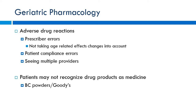Prescriber errors are a big problem when age-related changes in renal and hepatic function aren't accounted for. Patient compliance errors occur due to cognitive decline — patients taking too much or not enough. For example, Spiriva is an inhaler with a capsule you puncture to inhale; elderly patients often accidentally swallow the capsule instead, mixing it up with their other pills. I've had hundreds of calls to the poison center about this. If they keep doing it, they won't have enough medication to take properly.